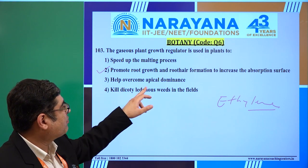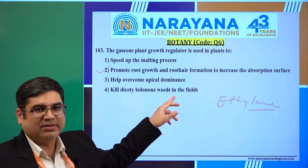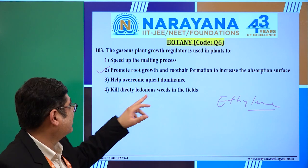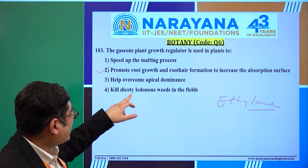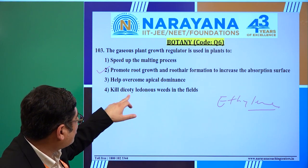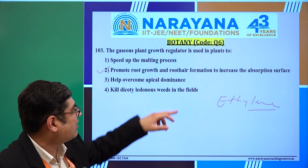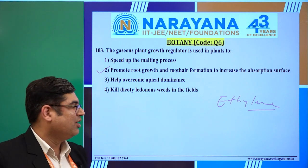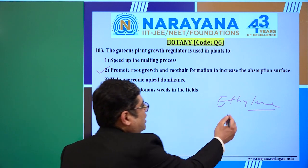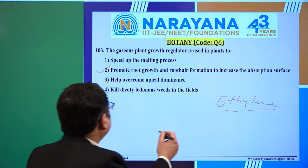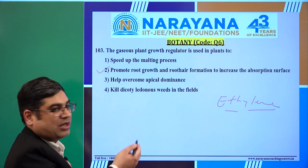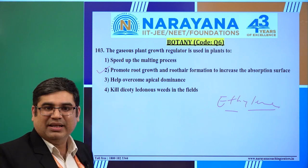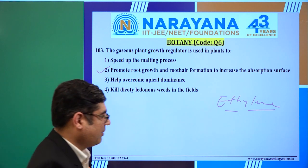The third option — helps overcome apical dominance — that is obviously not the role of ethylene. The fourth option — kills dicotyledonous weeds in the field — that is also not for this particular hormone. So ethylene is the answer for this question, and the second option is absolutely correct.